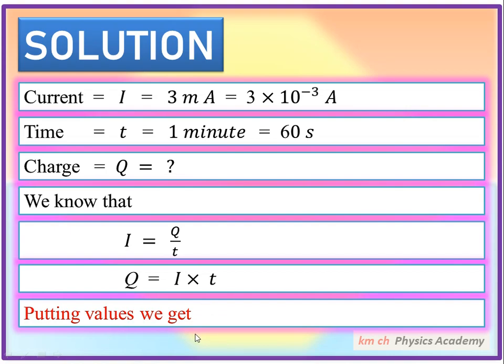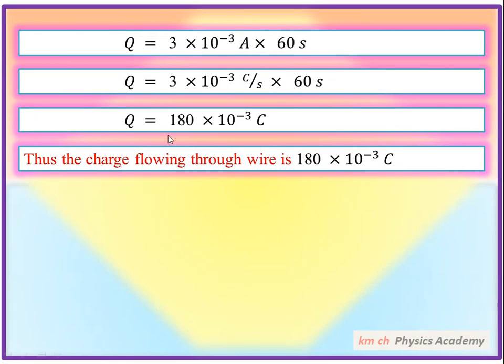Putting values we get: I is 3 into 10 to the minus 3 ampere, and time is 60 seconds. Ampere is coulomb per second, so seconds cancel out and we get coulomb unit. 3 multiplied by 60 gives 180, multiplied by 10 to the minus 3. Thus the charge flowing through wire is 180 into 10 to the minus 3 coulomb.